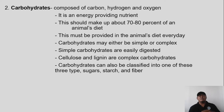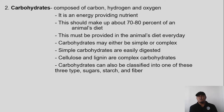Carbohydrates may either be simple or complex. Simple carbohydrates are the ones that are easily digested. Then there are complex carbohydrates such as cellulose and lignin, which will undergo a more complex digestion process — they go through different processes to be converted into usable carbohydrates.